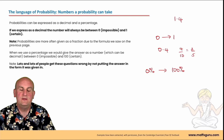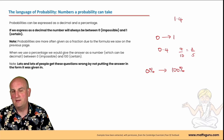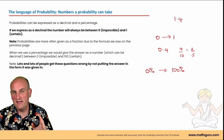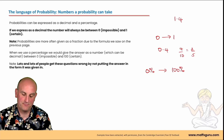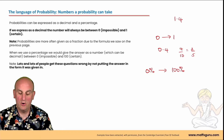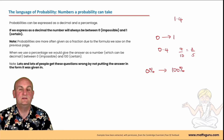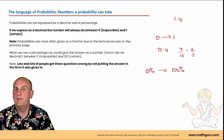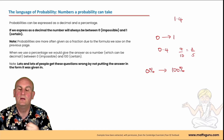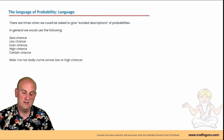For probabilities the highest is going to be 100% - unlike other areas of maths where we can have greater than 100%. Lots of people get these questions wrong by not putting the answer in the correct form. If the question gives it to you as a decimal, they're looking for a decimal. If they give it as a percentage, give a percentage. If they give it as a fraction, give a fraction.